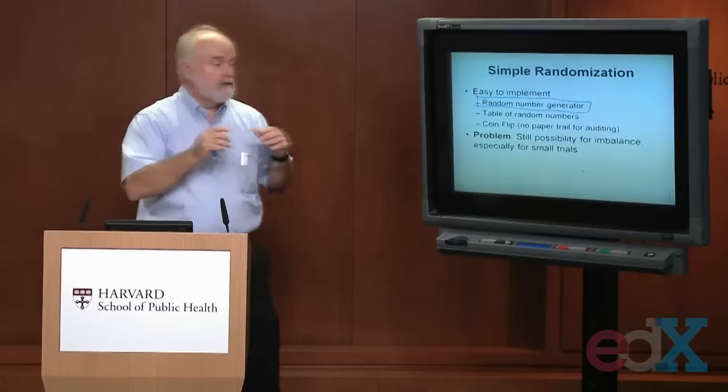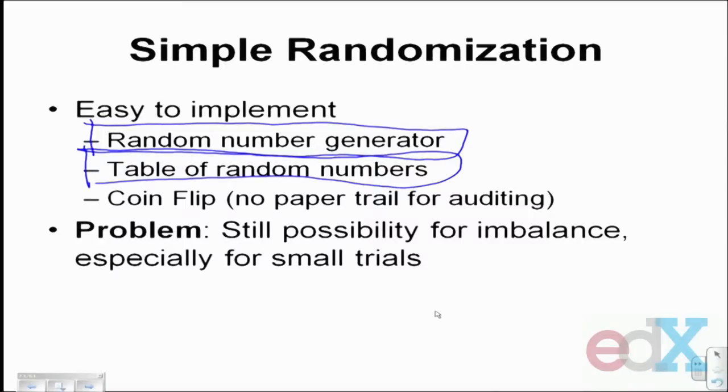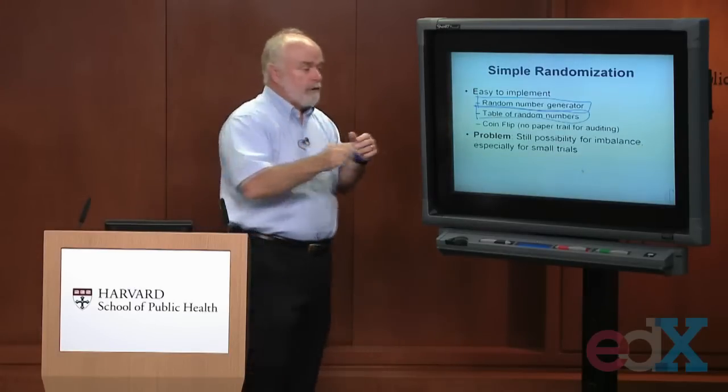In older days before computers, we had tables of random numbers in the back of statistics books. Every number in that table was just as likely to be 0 through 9 — there was no pattern. You could close your eyes, pick a point in that table, read the numbers to the right, and that would determine how the next people would be assigned. A sequence of those numbers, since they are random — some odd, some even — is essentially the same as flipping a coin. There's nothing wrong in conceptualizing a randomized trial as someone flipping a coin.